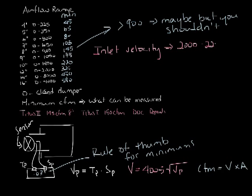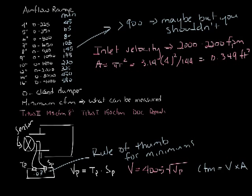Ideally, you'll want to keep the velocity through the inlet around 2,000 or 2,200 feet per minute. So let's look at that 8-inch box again. The area of the 8-inch box is pi r squared, which is 3.14 times 4 squared, divided by 144 to get into feet. That's 0.349 square feet.